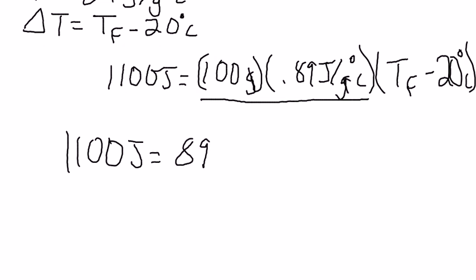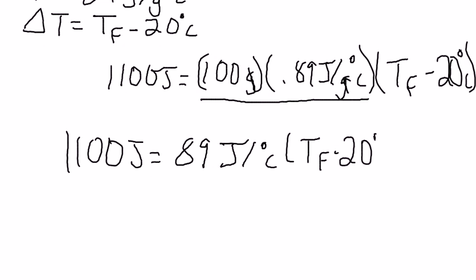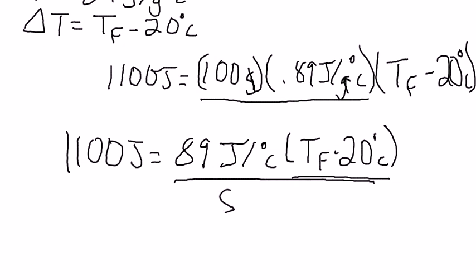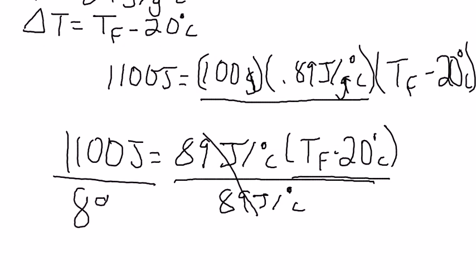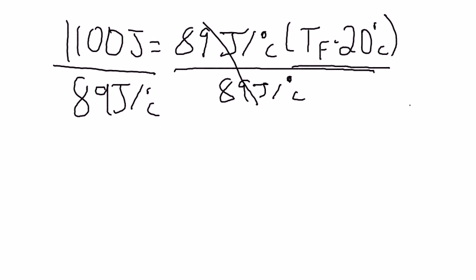Notice we have grams and grams canceling, so we get 89 joules per degree Celsius times the quantity temperature final minus 20 degrees Celsius. We cannot multiply the 89 by the 20 inside the parentheses directly. So what we're going to do is divide 89 joules per degree Celsius into 1,100. So 1,100 divided by 89, once you put that in your calculator, you should get 12.4 degrees Celsius is equal to temperature final minus 20 degrees Celsius.